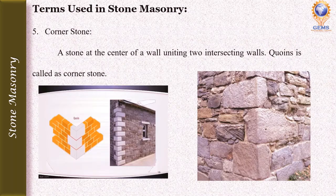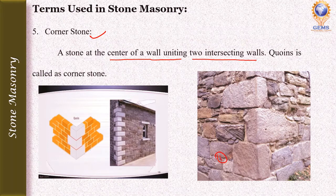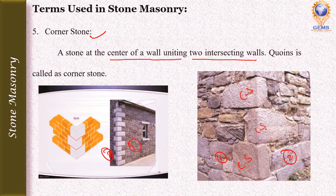The fifth term is cornerstone. A cornerstone is a stone at the corner of a wall uniting two intersecting walls. As shown in the diagram, wall number one and wall number two are connected by a cornerstone — it is provided at the intersection to unite the two walls.